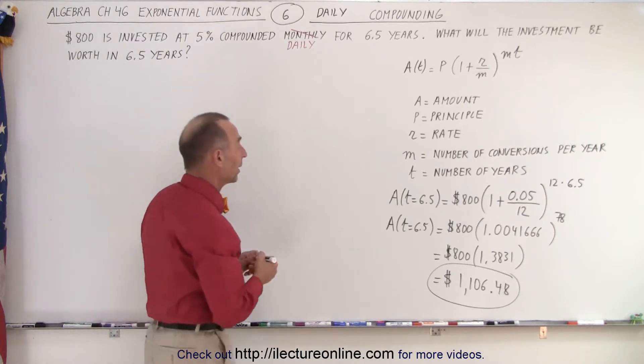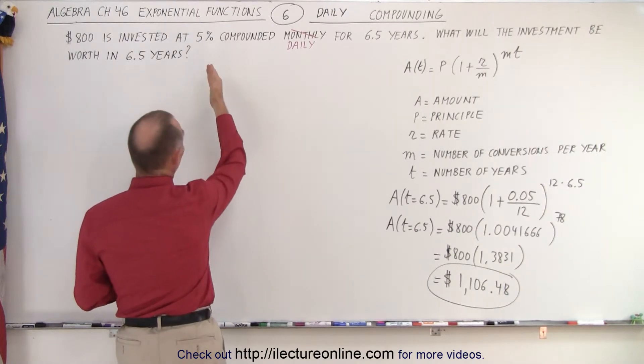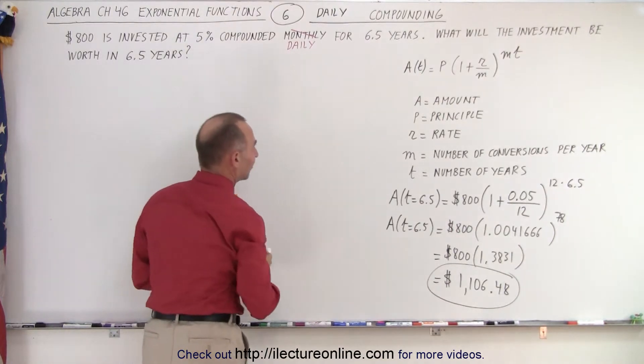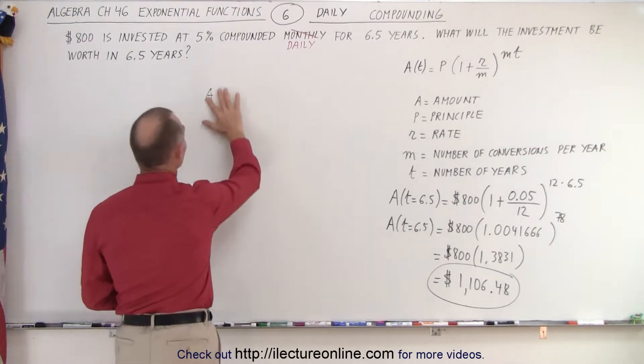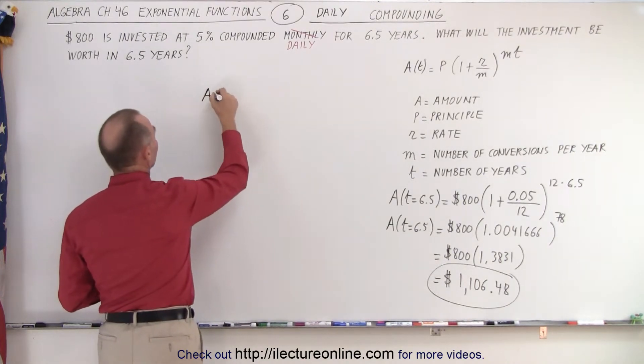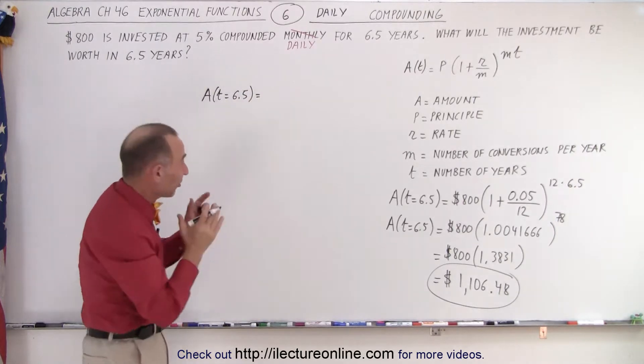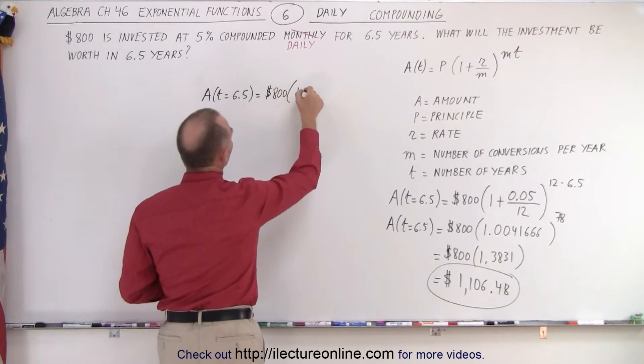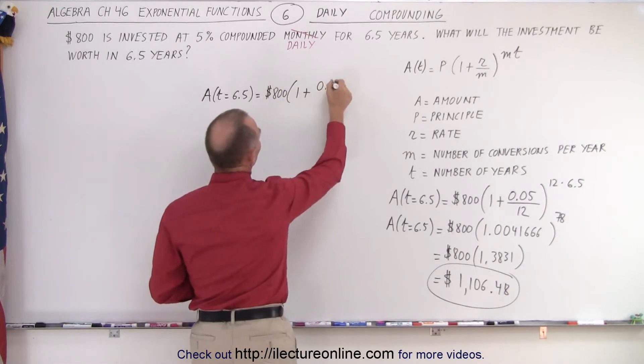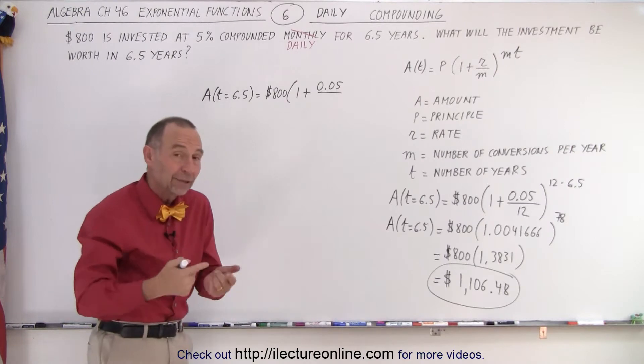Now we'll show you what daily compounding looks like for the same numbers. So we have $800 invested at 5% compounded daily for 6.5 years. So the amount, and I think this pen is dying on me, so let me try a different pen. The amount is equal, and I should write the amount as T is equal to 6.5 because it's invested for 6.5 years, and so that would be equal to the original investment, which is $800, times 1 plus the rate. The rate is 0.05, but now we have to divide it by the number of conversions, meaning the number of times per year that we're adding interest.